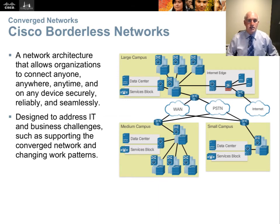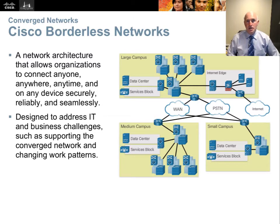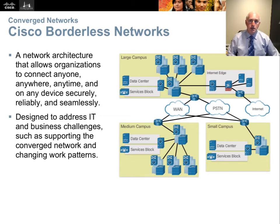Cisco calls the concept of being able to work at home or remote locations and still have secure connections the Cisco borderless network. That's essentially just VPNs — the primary tool Cisco uses to accomplish a borderless network is a VPN. The idea is that when you leave the company buildings, the network doesn't end. Whether you're on your iPhone at lunch or at home on your laptop, you still have access to work resources. It provides seamless integration of your data, your applications, and your connectivity.